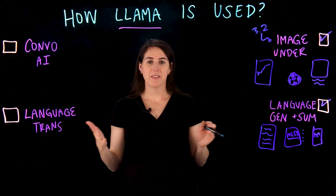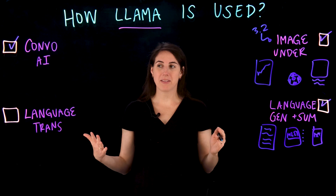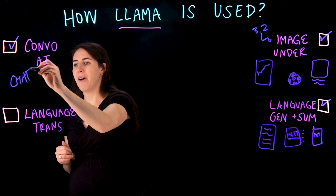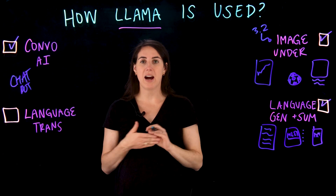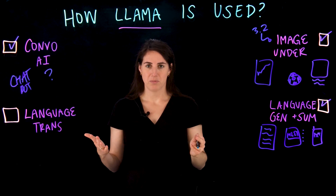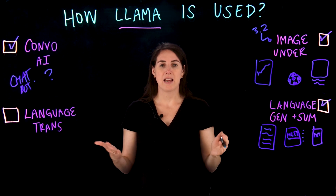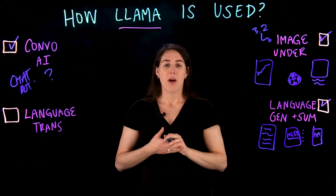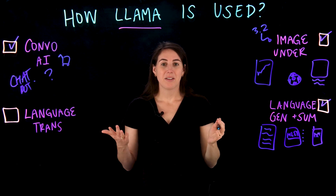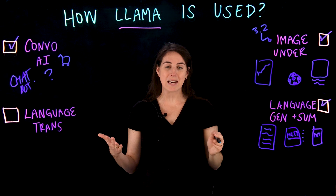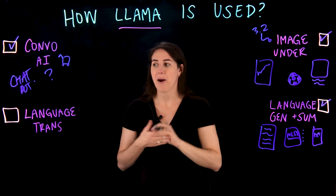Our next popular use case is conversational AI — building off of language generation and summarization to create a chatbot or a virtual assistant. This pulls in question and answer as well, so you can self-serve by asking specific questions of the chatbot and get back very specific responses. Think about an online or in-store shopping experience where you might want to ask specific questions about a product to get product details without waiting on an agent — that can be done through a Llama-powered chatbot.